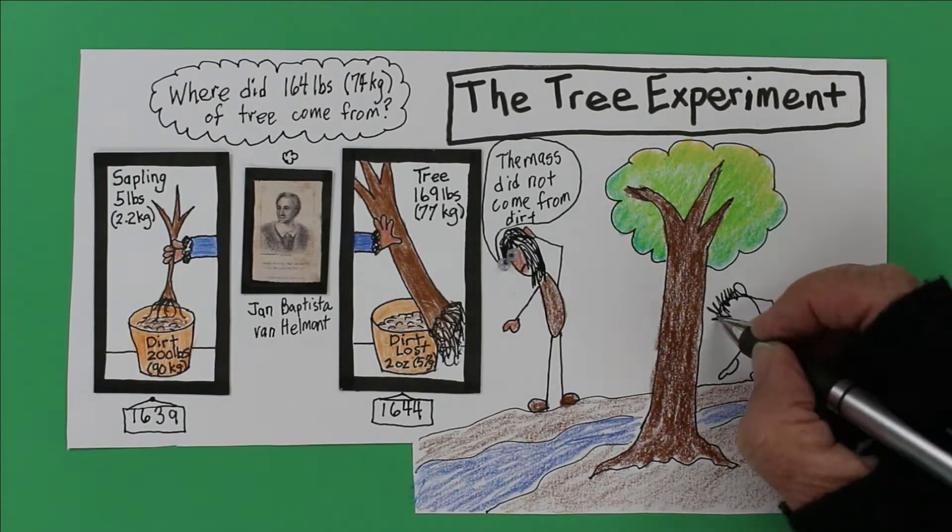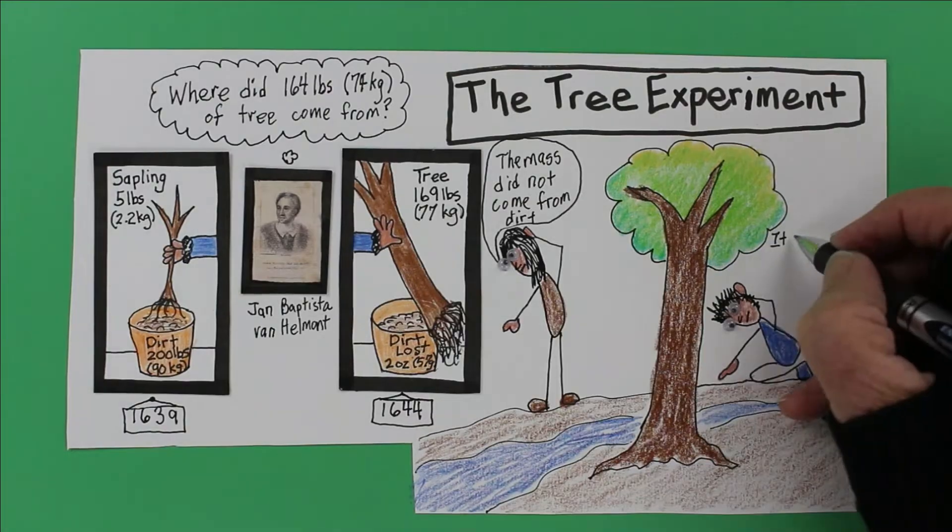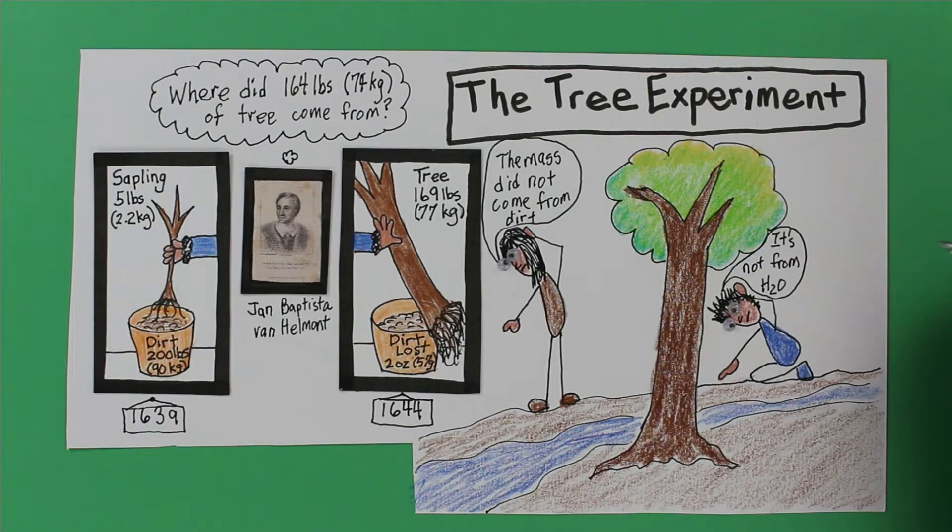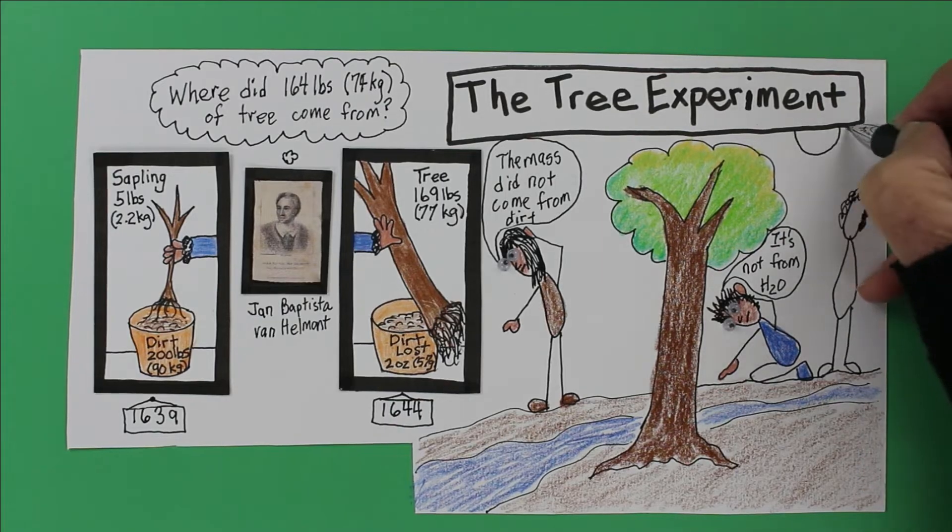Van Helmont guessed it came from the water. But he didn't know what we know. Water is made of just hydrogen and oxygen. And that's not enough to make the snazzy solids we find in trees. So if it wasn't the soil and it wasn't water,